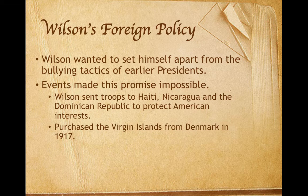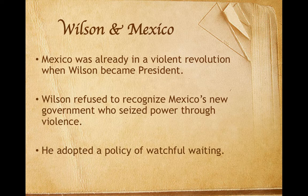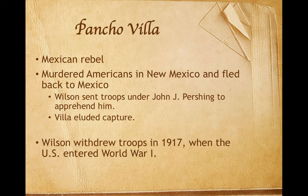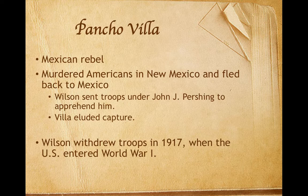President Wilson also expanded America's colonial empire by purchasing the Virgin Islands from Denmark in 1917. Mexico was already undergoing a violent revolution when President Wilson became president. Wilson refused to recognize the new Mexican government, which had seized power through violence. Instead, he adopted a policy of watchful waiting. When troops of the rebel leader Pancho Villa murdered Americans in New Mexico and retreated across the border, Wilson reacted. He sent an American expeditionary force into Mexico under General John J. Pershing to apprehend Pancho Villa. Nevertheless, Pancho Villa eluded capture. Wilson finally withdrew troops from Mexico in 1917 when the United States entered World War I in Europe.